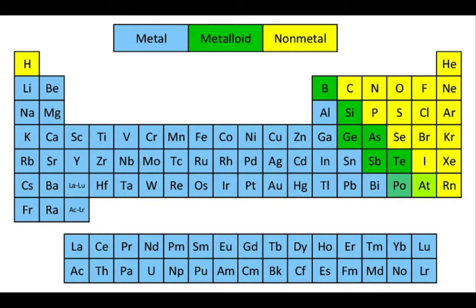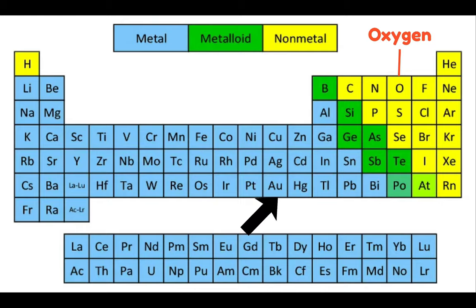In many cases, the letters in a chemical symbol correspond to the name of the element, but not always. For example, oxygen is O, zinc is Zn, but gold is aurum — AU. Aurum is the Latin word for gold and the source of its chemical symbol, AU.